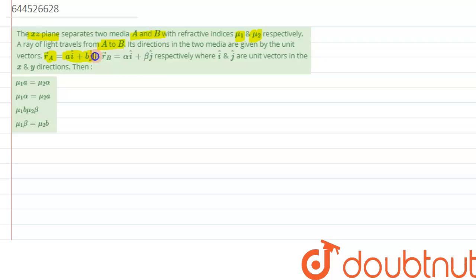And position vector of rb is given as rb alpha i cap plus beta j cap respectively, where i and j are unit vectors in xy direction. Then we need to basically check the relation between the two.